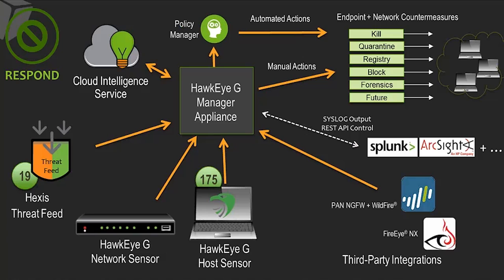All indicators, incidents, threat scores, actions, and action outcomes are syslogged in common event format to Splunk, ArcSight, or other SIEM or big data platforms. Our REST API allows you to programmatically execute those actions as well. We have an integration with Splunk where Splunk can execute actions as part of their response framework and programmatically communicate to the Hawkeye G manager appliance to perform actions on endpoints — such as kill these five processes, quarantine these two files, or remove these registry settings — all part of the same platform.